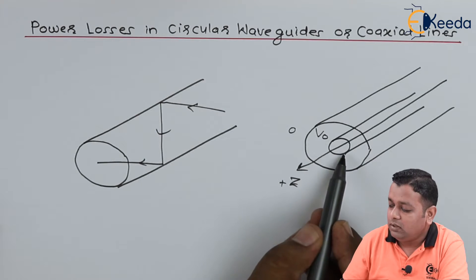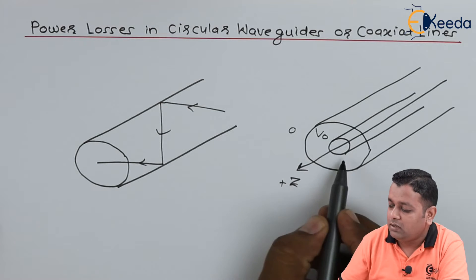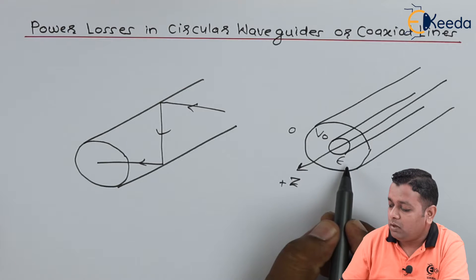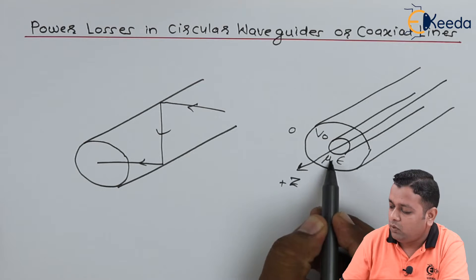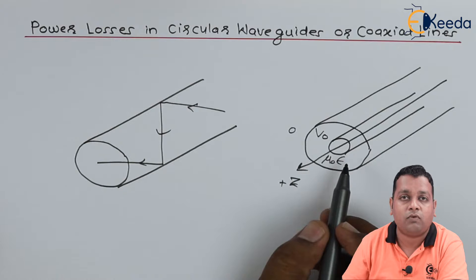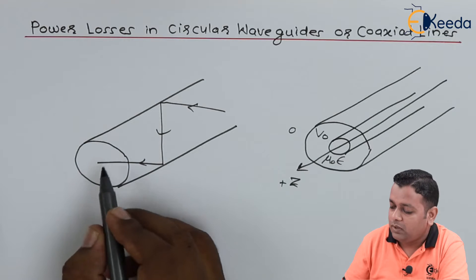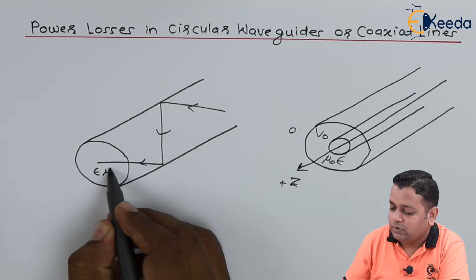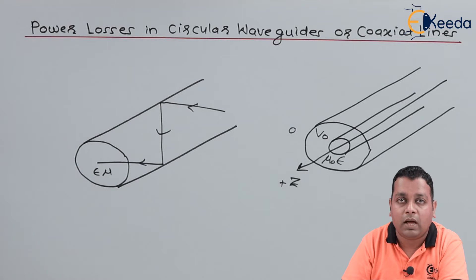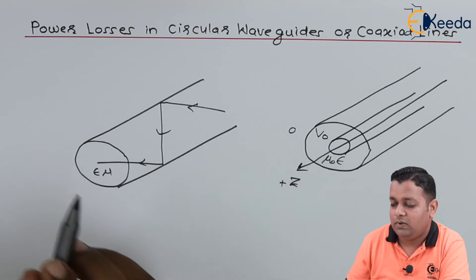Here the two conductors are separated by the dielectric material having the corresponding permittivity epsilon. The value of mu zero can be regarded for the non-magnetic type of material. Here also the cavity will be characterized by epsilon and mu for the permittivity and permeability of the dielectric medium inside the cavity.